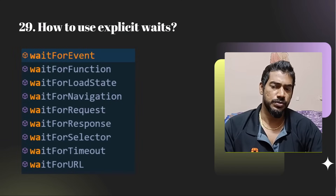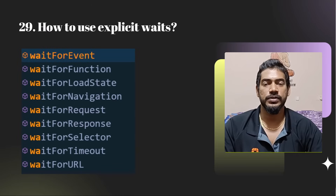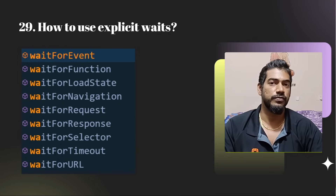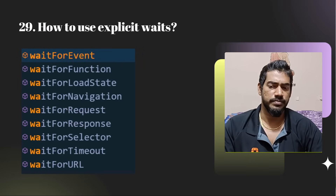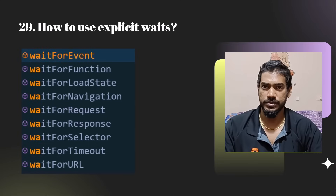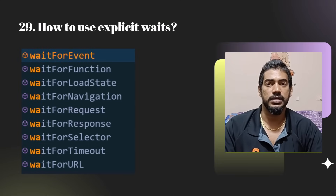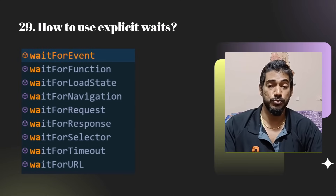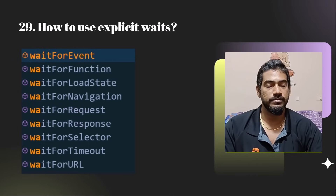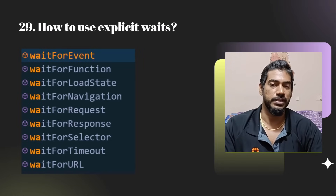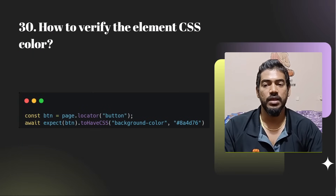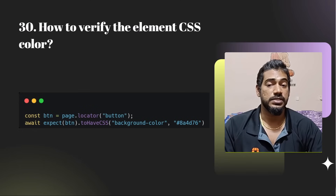How to use explicit wait? Playwright is famous for its inbuilt wait mechanisms. There is no official statement on the website calling it 'explicit wait', but there is functionality that behaves like explicit wait based on its naming — for example, waitForSelector or similar wait functions.